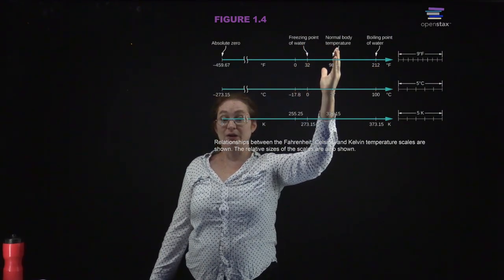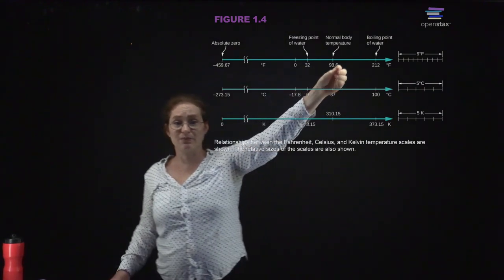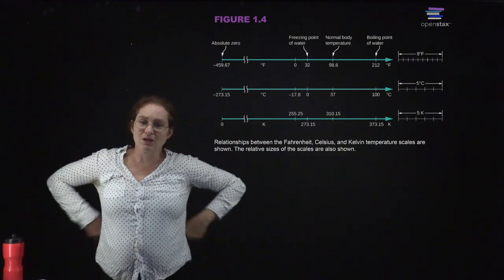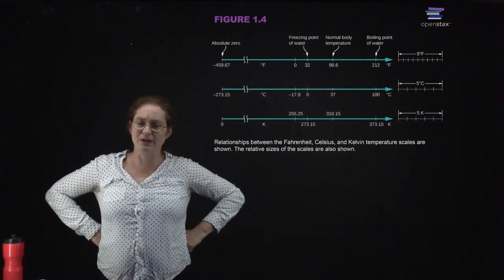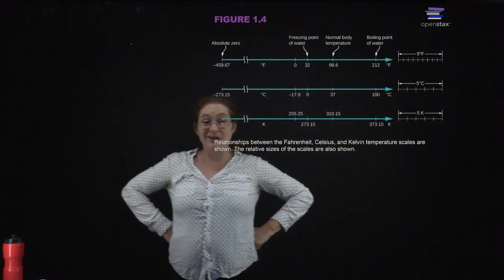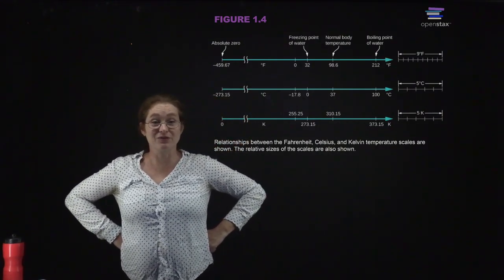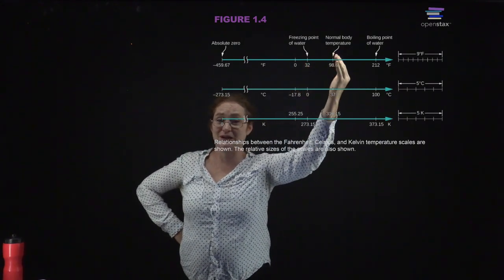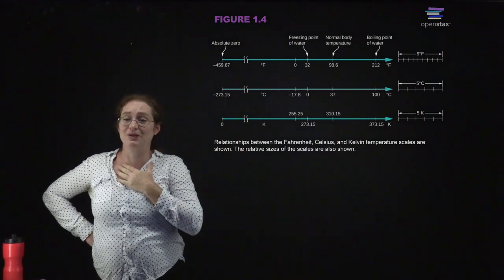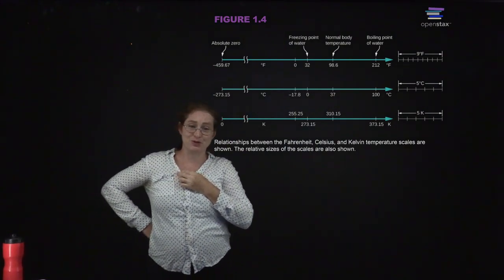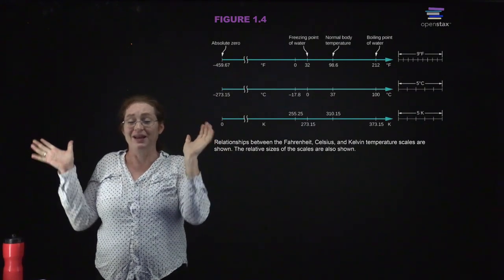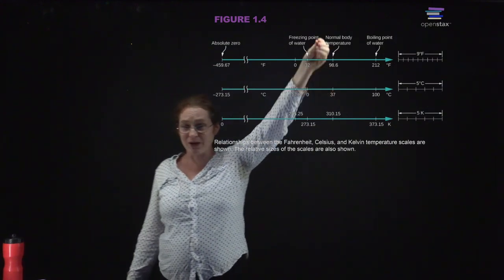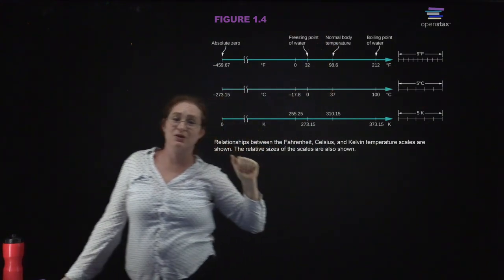Fun fact: there is some variation in people's regular body temperature, and Fahrenheit's wife's body temperature was at 100 degrees Fahrenheit — that's why 100 degrees Fahrenheit was set there. It also happens to be approximately the same as the rectal temperature of a cow; I heard that was why it was set, but I looked it up and unfortunately that's not true. Hopefully that will stick in your head as a memory aid.